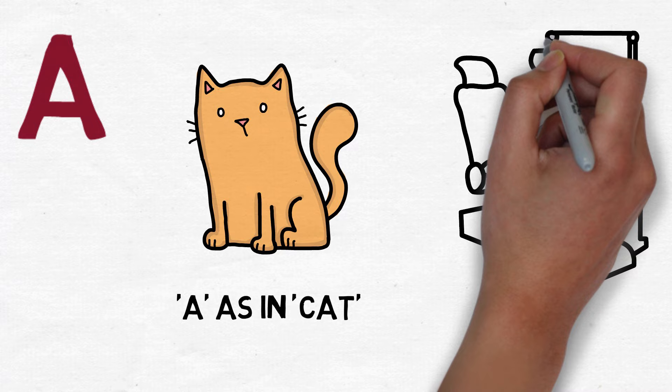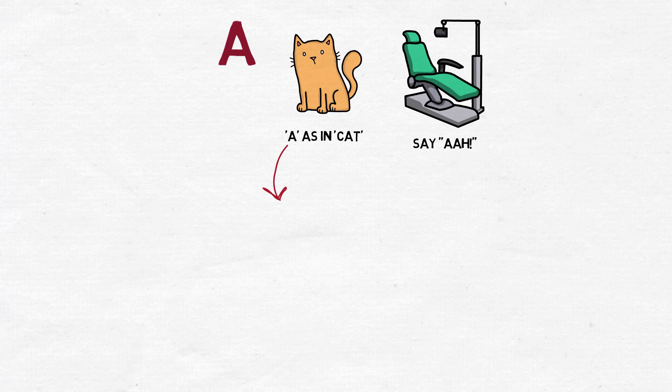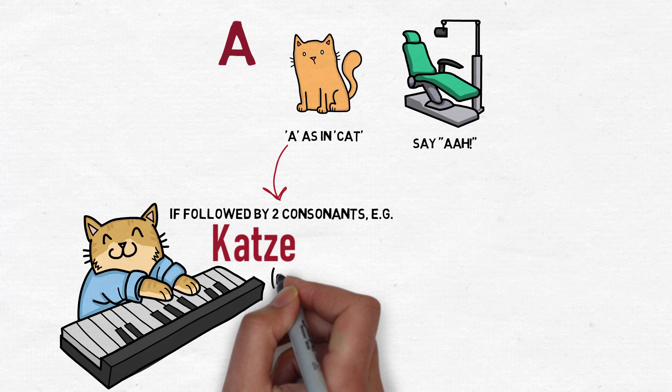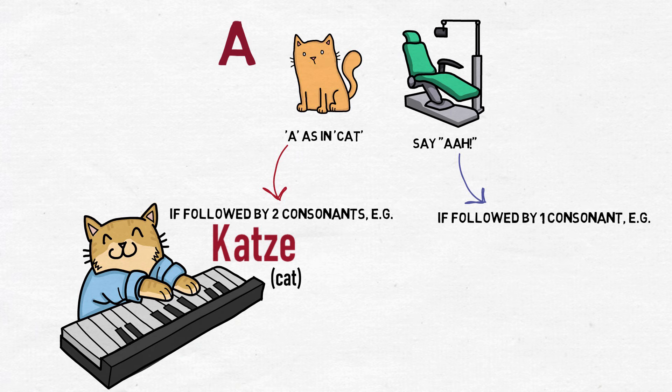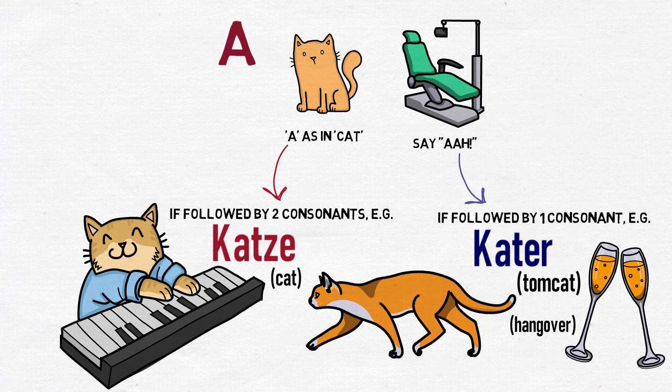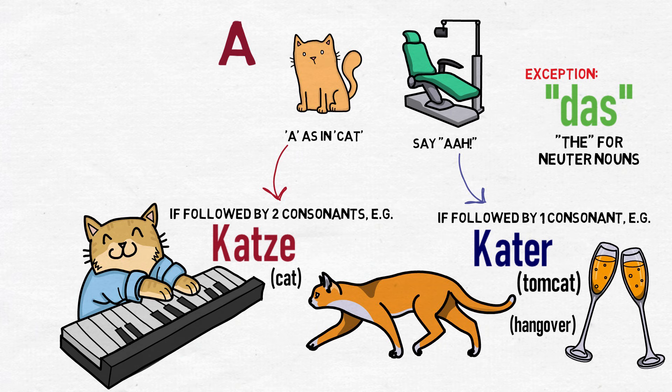When you see an A on its own in a word, it can have a short sound like the A in 'cat', or a long A like when visiting the dentist and they say 'say A'. The short sound happens if the vowel is followed by two or more consonants — for example, Katze, meaning cat. The long sound occurs if the A is followed by one consonant — for example, Kater, meaning tomcat, but more commonly meaning hangover. The only common exception is das, a German word for 'the', pronounced with a short A.